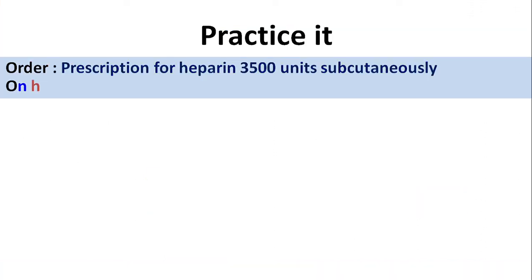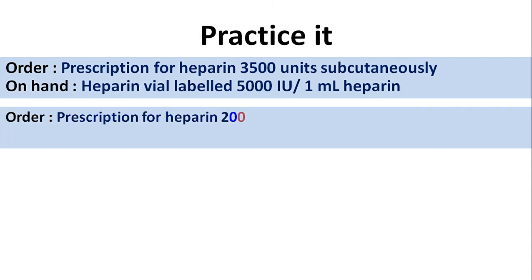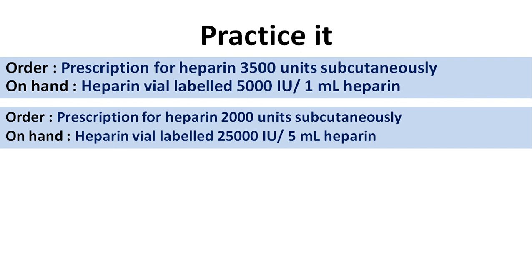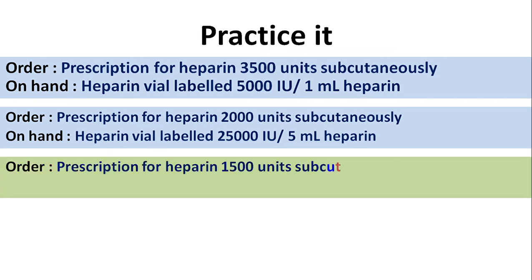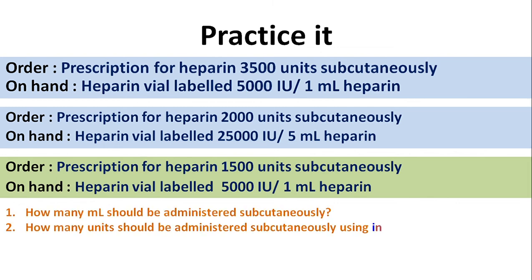Here are a few examples for your practice — please mention your answers in the comment box. First: doctor's order is heparin 3500 international units subcutaneously; on hand is heparin vial labeled 5000 international units per ml. Second: doctor's prescription is heparin 2000 international units subcutaneously; on hand is heparin vial labeled 25,000 international units per 5 ml. For each question, calculate how many ml and how many units (using insulin syringe, 1 ml equals 40 units) should be administered subcutaneously.